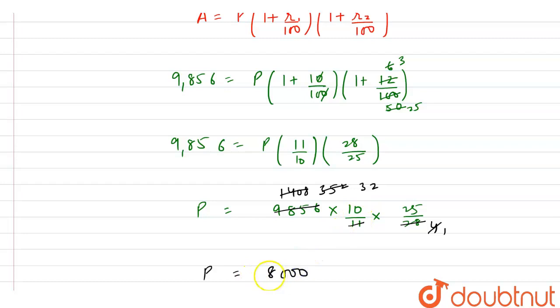So 800 into 10 that is 8,000. So we can say that our principal amount is rupees 8,000 and hence this is our final answer. Thank you.